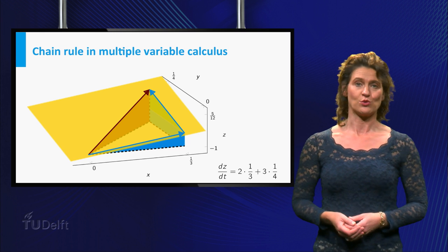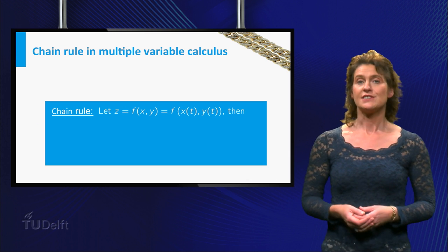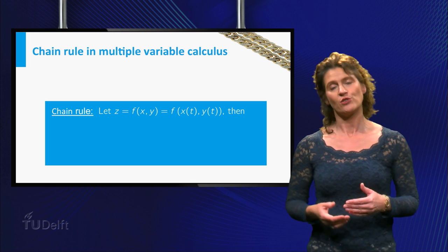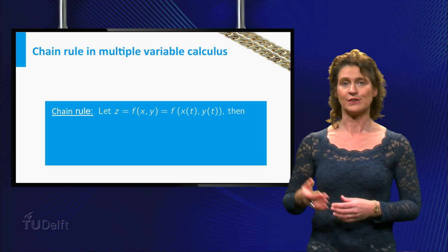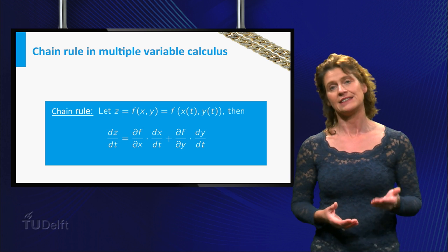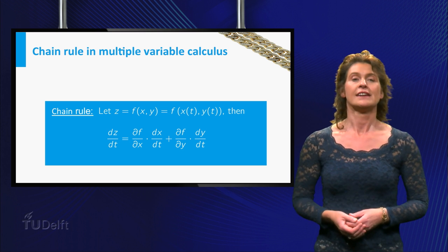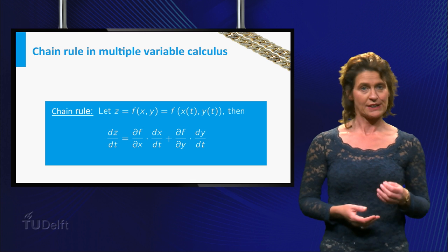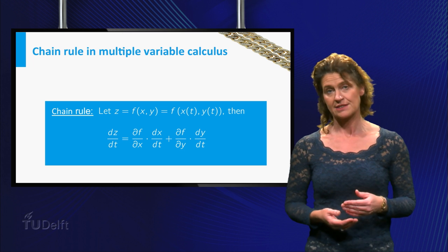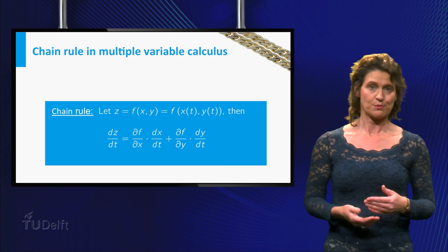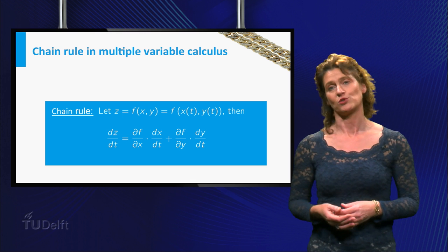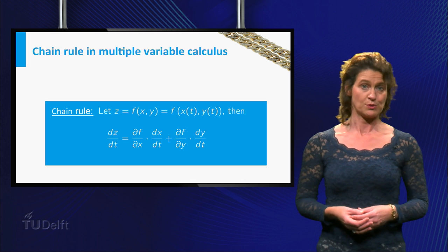This is the chain rule. The chain rule gives you a method of calculating a derivative in the case there is a chain of functions plugged into each other. Here it is: let z equal f depending on x and y, then the derivative of z with respect to t is equal to the partial derivative of f with respect to x times the derivative of x with respect to t, plus the partial derivative of f with respect to y times the derivative of y with respect to t.